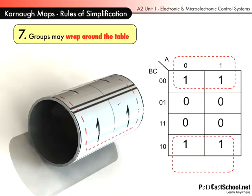Rule seven, now this is a really interesting one. You can wrap around a table. So if you've got ones on the top like here and ones on the bottom, you can group those as a group of four. See that? In actual fact, this is represented by what, well, you tell me what's common. The A's aren't common because the A is zero there and one there, so that's not it.